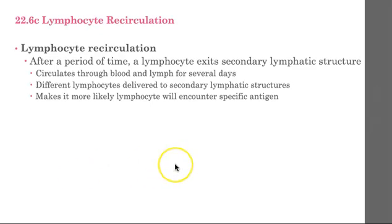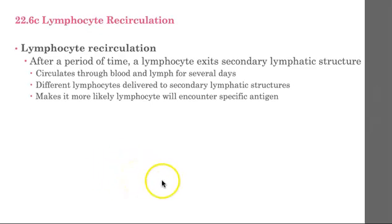Finally, let's talk about lymphocyte recirculation. After some time, a lymphocyte exits the secondary lymphatic structure and circulates through the blood and lymph for a couple of days. The lymphocytes are delivered to secondary lymphatic structures, and hopefully a lymphocyte will encounter a specific antigen if needed to trigger the immune response.